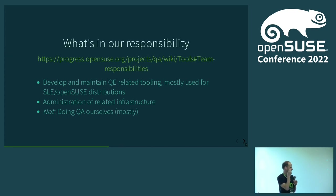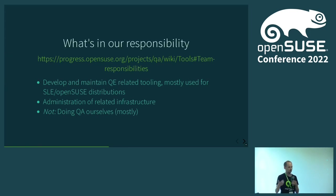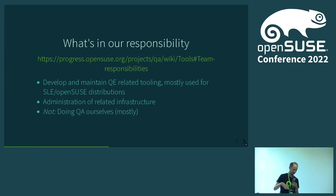The second point is that we also do the administration of the related infrastructure. For example, OpenQA.opensuse.org — that's the main OpenQA instance we use as a showcase, used for development of OpenSUSE distributions, which you may use when working on developing OpenSUSE components. We care about the central web UI instance there as well as the worker machines connected there. The same we do for the SUSE internal instance, OpenQA.suse.org, used for SLE development and other internal products.